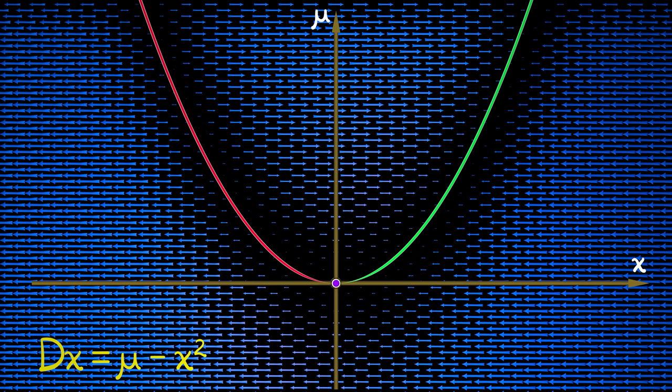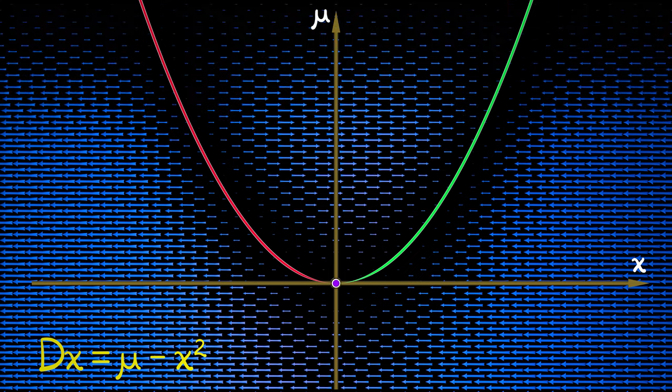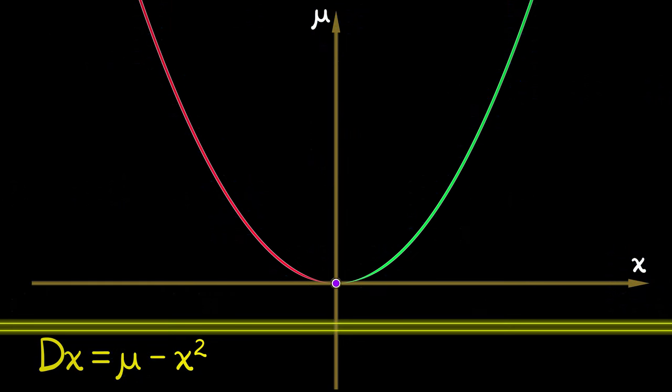So the way to think about it is this. You choose a value of your parameter mu, and then you stay in that horizontal line. You can pick whatever initial conditions you want, and then start flowing. Start having them move over time.